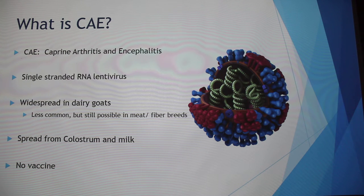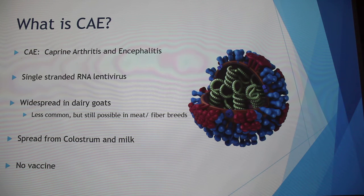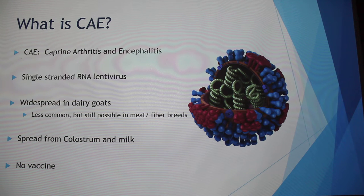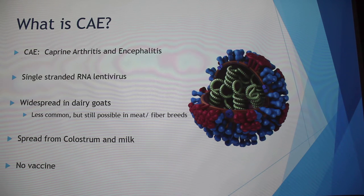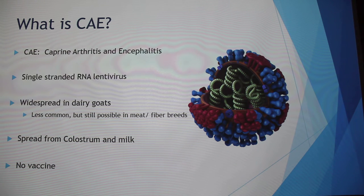CAE is Caprine Arthritis and Encephalitis, and this affects goats. It's a single-stranded RNA lentivirus, so it has a very slow incubation, like FIV. It is spread through colostrum and milk, so as soon as the baby is nursed from a CAE-positive doe, they are automatically infected. It's widespread in dairy goats because of management practices. There is not a vaccine for this.